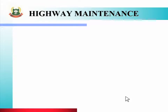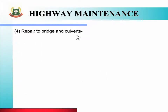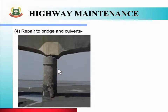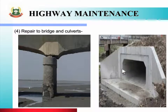Fourth type of road maintenance is repair to bridge and culverts. See the figure of bridge column, and in this figure you will see the culvert. Inke repair ke liye special repair process use karte hain.